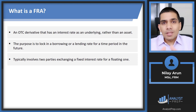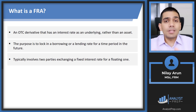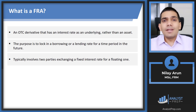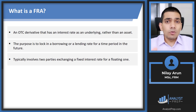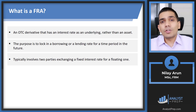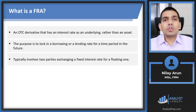Let's do a quick recap of what a forward rate agreement is. Just like a traditional forward contract, an FRA is also an OTC derivative — over-the-counter — meaning it is not found on an exchange. It is a private, customized contract between two parties, so it does come with its share of credit risk.